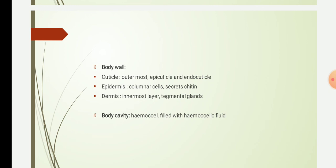After the cuticle comes the epidermis, which is formed of a single layer of columnar cells resting on the basement membrane, and it secretes the chitin. The third layer is the dermis, which is the innermost layer of the body wall, made up of a thin layer of connective tissue. This dermis contains tegmental glands which secrete the epicuticle layer of the cuticle.